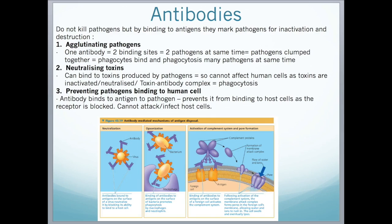Antibodies do not kill pathogens directly, but by binding to antigens they mark pathogens for inactivation and destruction. Agglutinating pathogens: one antibody has two binding sites, meaning it can carry two pathogens at the same time, producing a cluster of pathogens which allows phagocytes to bind and destroy many pathogens at once through phagocytosis. Neutralizing toxins: antibodies bound to antigens on the surface of a virus neutralize it by blocking its ability to bind to a host cell. Preventing binding: an antibody binds to an antigen on the pathogen, blocking the receptor and preventing it from attacking or infecting the host cell.